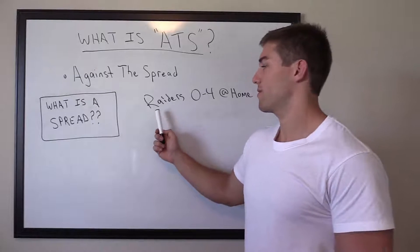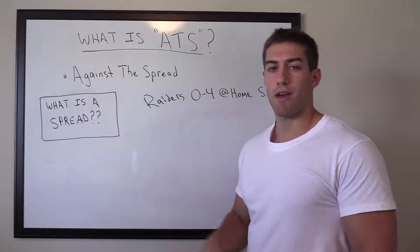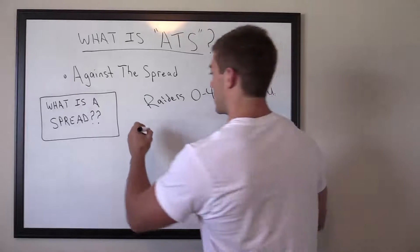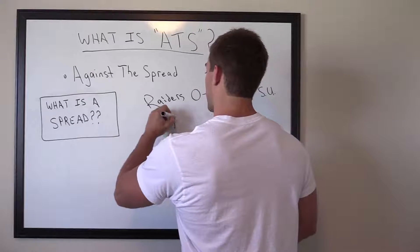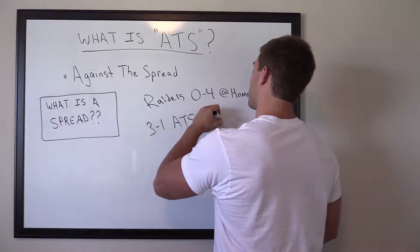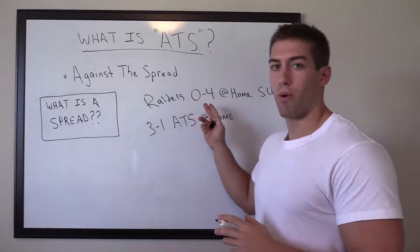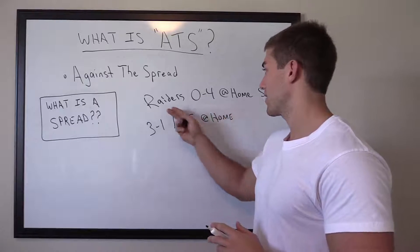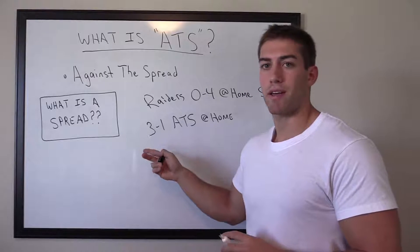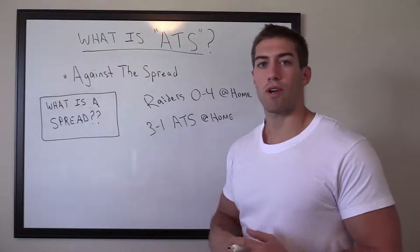So for example, this year the Raiders might be 0-4 at home straight up, but as bettors we always want to know against the spread how they're doing. A stat could be that they are 3-1 against the spread at home. So how does that work? Well, let's say they were 7-point underdogs in each of those games that they lost, but in 3 of them they lost by let's say a field goal, and in 1 they got blown away — they would be 3-1 against the spread.